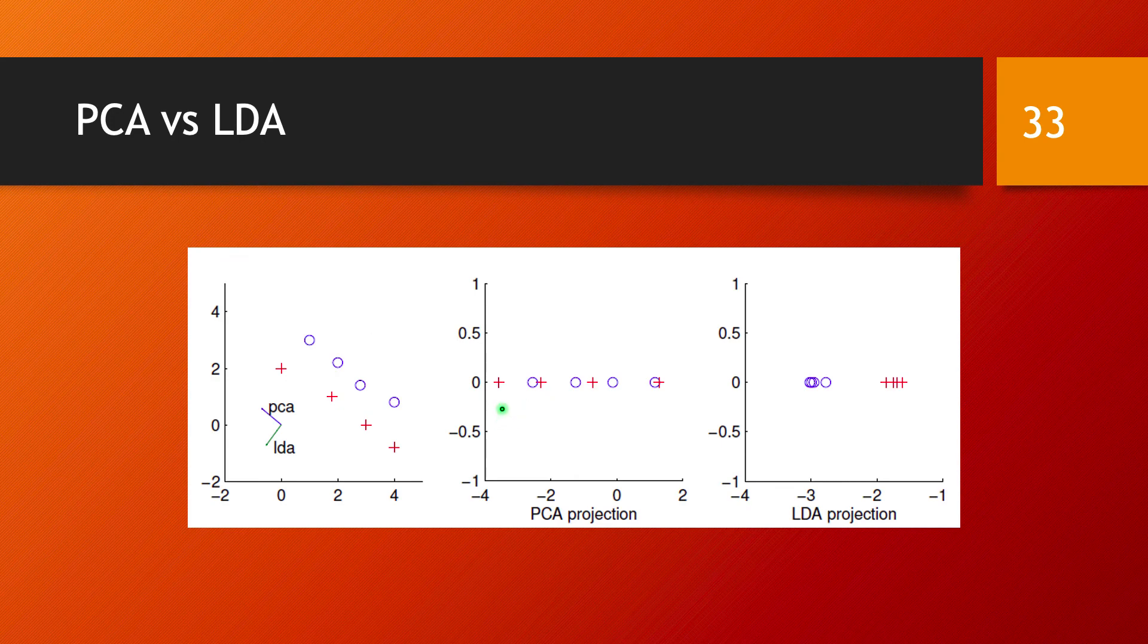Now, when you look at the consequences of the PCA and the LDA projection. So when you project along the vector identified by PCA, you are going to get these data points. And again, this is completely successful from the point of view of the logic behind PCA because it preserves the spread of the data points both in the red class and in the blue class.